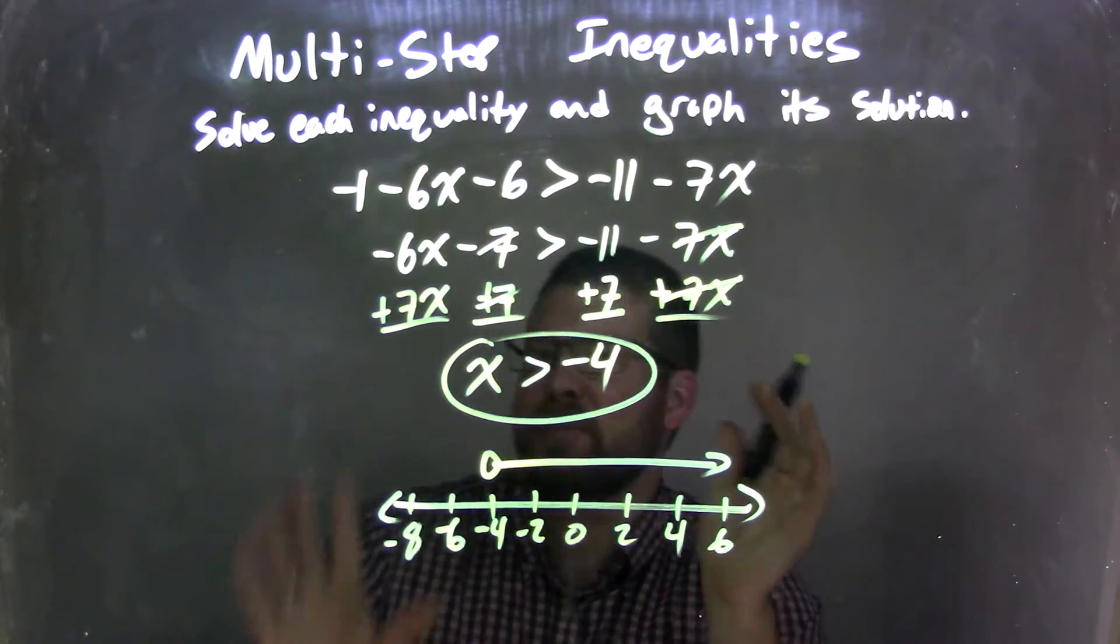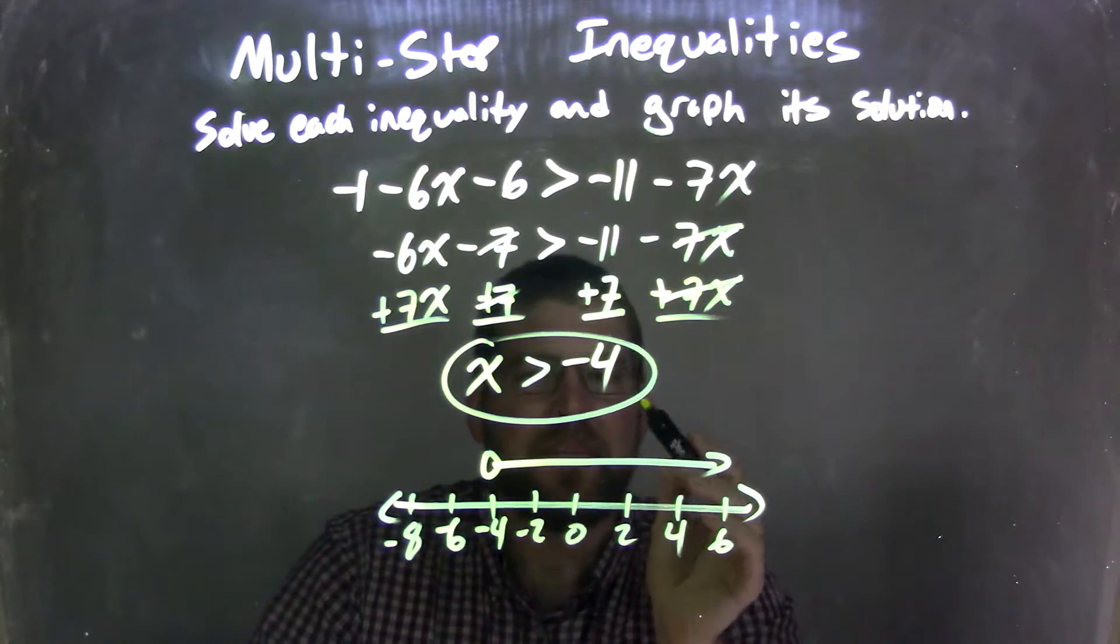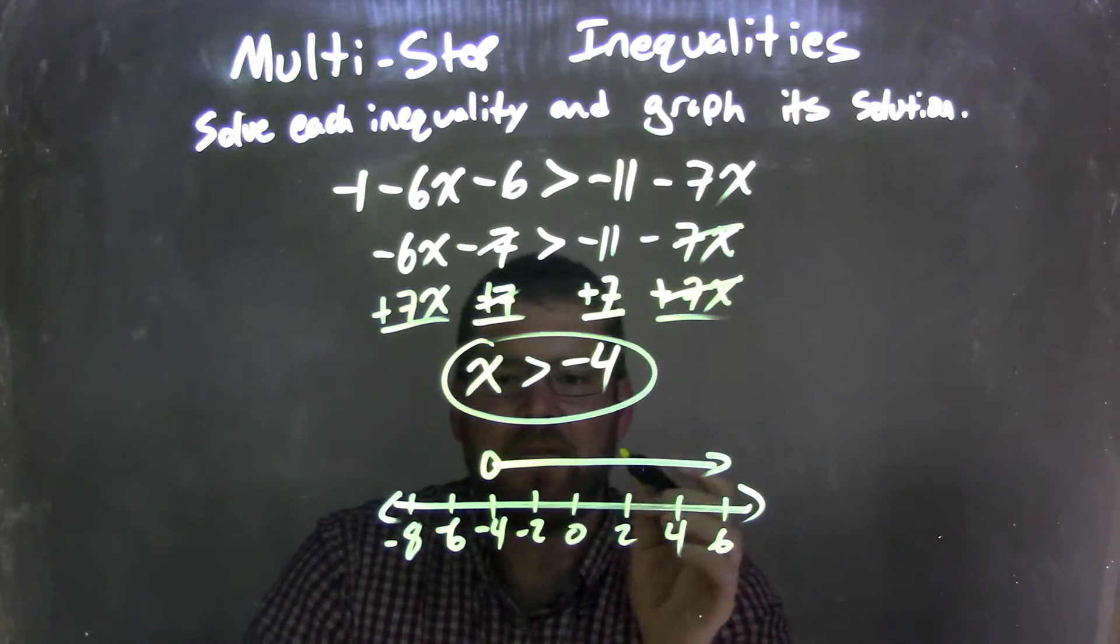And that was it. And actually, by doing that, I kind of saved some space by showing all my work, giving me x is greater than negative 4. From there, I need to graph it.